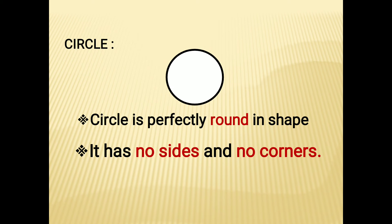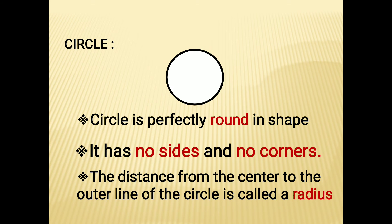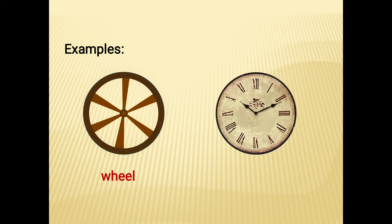A circle has no sides and no corners. The distance from the center to the outer line of the circle is called the radius. A circle has two main measurements: the diameter and the radius. The diameter passes through the center; the radius is half the diameter. The center point is O, and the line from O to point A on the outer edge is called the radius. Examples of a circle are a wheel and a clock.